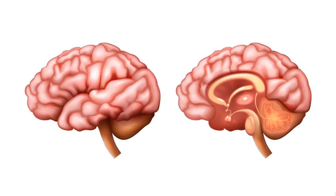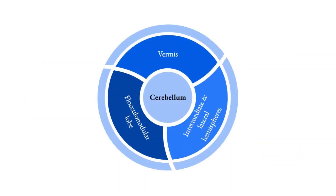The cerebellum is derived from the metencephalon and is located dorsal to the pons and medulla. The fourth ventricle is located between the cerebellum and the dorsal aspect of the pons. The cerebellum functions in the planning and execution of skeletal muscle contractions, and consists of a midline vermis, two lateral cerebellar hemispheres, and the flocculonodular lobe.